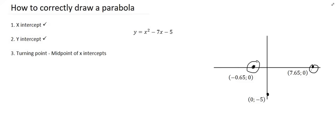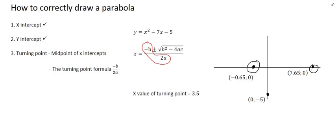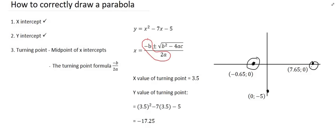The other way is to use a turning point formula. That turning point formula can be located within the quadratic formula. The part highlighted in red is the formula used to locate the x-value of the turning point: it's minus b over 2a. You simply type that into your calculator, and that's going to give you an x-value for the turning point of 3.5. Note that many people straight away say make y equal to 0, but that's how you find the x-intercept.